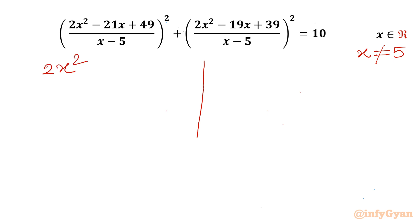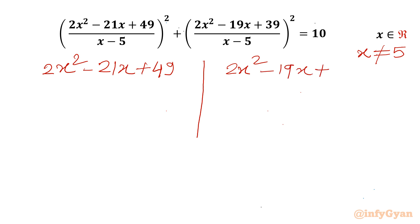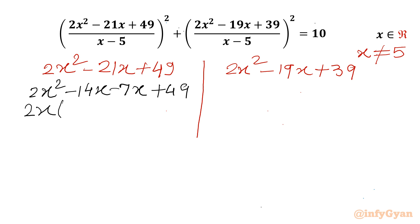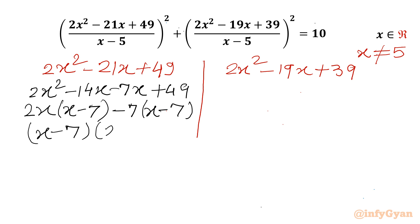The numerator is 2x² minus 21x plus 49. Let us find factors first by splitting the middle term: minus 21x as minus 14x minus 7x plus 49. Now 2x is common from the first two terms, giving (x minus 7) in the bracket. Taking minus 7 common gives the same bracket, so the factorization is (x minus 7)(2x minus 7).